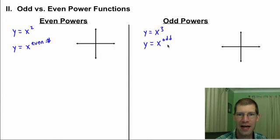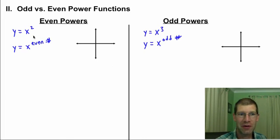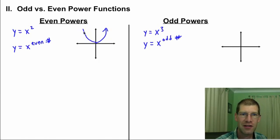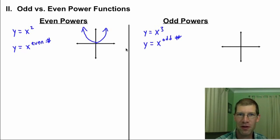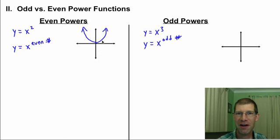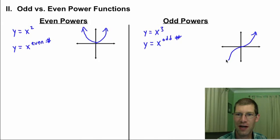If you take your graphing calculator and punch in y equals x squared or y equals x to the twelfth, you're going to get a shape that looks like a parabola — symmetrical, the same general shape regardless of the even exponent. It'll just be a little flatter or sharper depending on the exponent. Odd powers look similar on one side, but the other side turns down, giving that general S-curve shape.